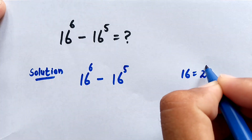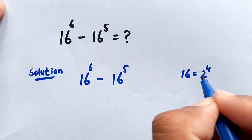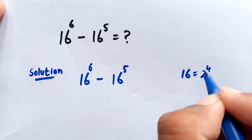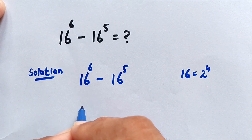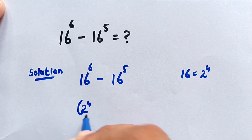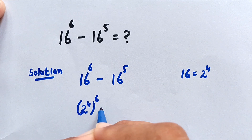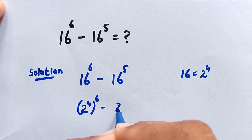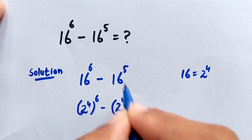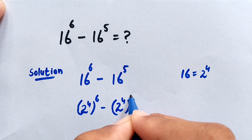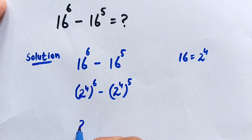We know that 16 is equal to 2 to the power of 4, so here we have to put 2 to the power of 4 in place of 16. This will become 2 to the power of 4, to the whole power of 6, minus 2 to the power of 4, to the whole power of 5.